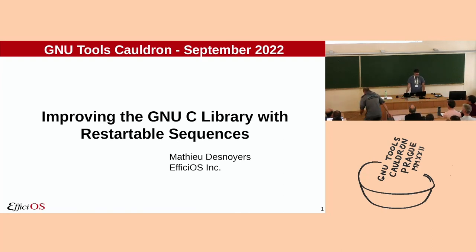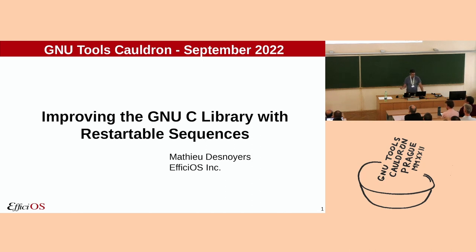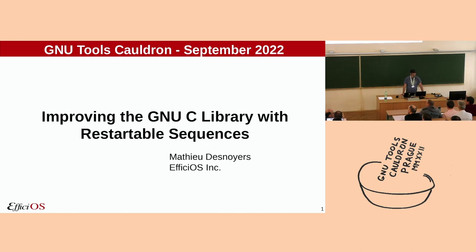Hello, everyone. My name is Mathieu Desnoyers. I am CEO at Efficios. I maintain quite a few things: the Restartable Sequences system call in Linux, the Membarrier system call in Linux, the part of the LTTNG project for kernel and user space tracing, as well as the user space RCU library.